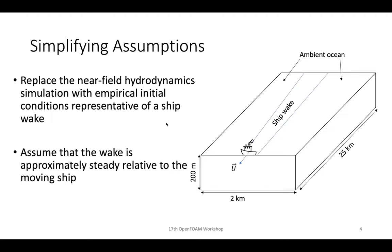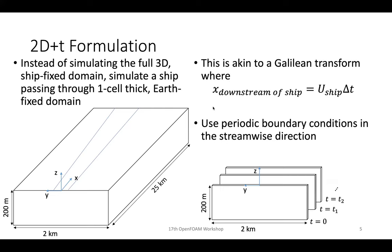Given the cost of 7.5 billion cells minimum, we looked into simplifying assumptions. First, we replace the near-field hydrodynamic simulation with empirical initial conditions representing a ship wake, avoiding boundary layer resolution. Second, we assume the wake is approximately steady relative to the moving ship, eliminating time dependence in the ship's reference frame. Third, instead of simulating a full 3D ship-fixed domain, we simulate the ship passing through a one-cell-thick earth-fixed domain that varies in time — akin to a Galilean transform turning time into a spatial coordinate.